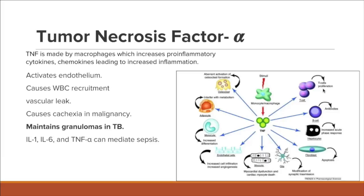TNF-alpha has many effects, but importantly it also causes cachexia in malignancy. Patients often complain about losing weight — for example, a patient with small cell carcinoma of the lung or renal cell carcinoma. The reason they're losing weight is because of tumor necrosis factor, since necrosis means cell death. In cancer, this patient eventually develops cachexia and starts losing weight.